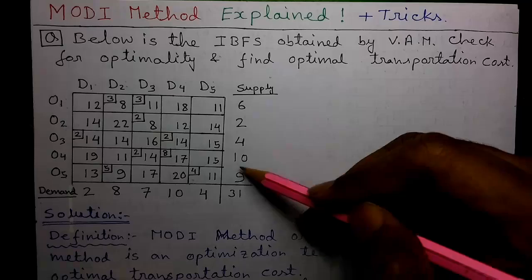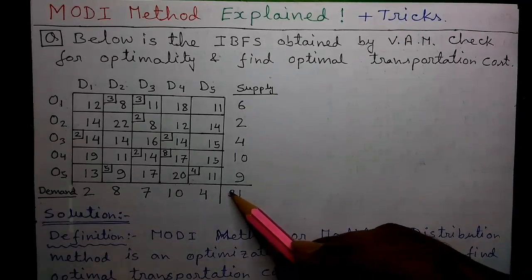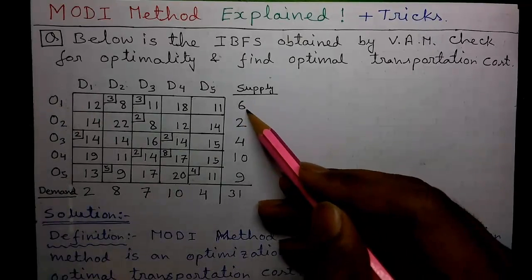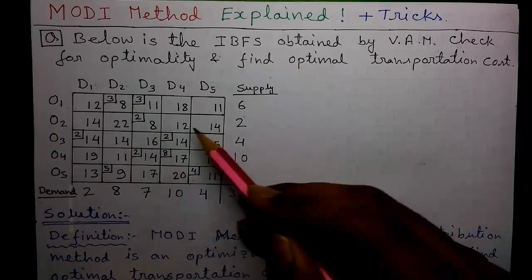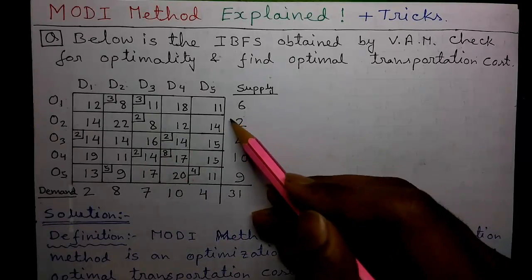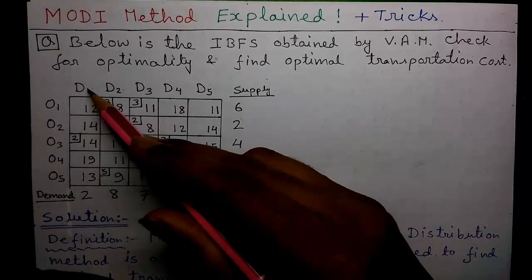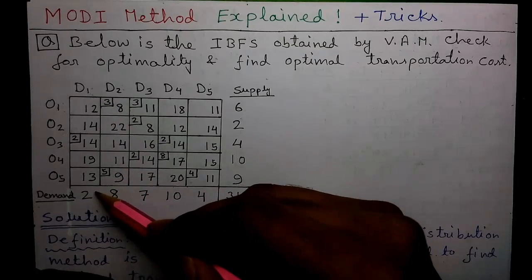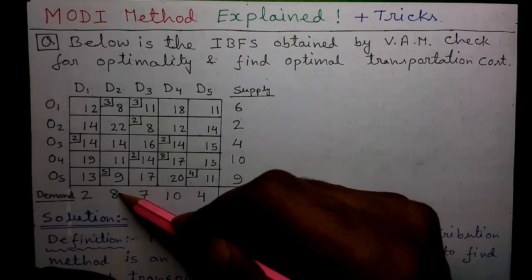Next, these outside vertical values are called the supply values and these horizontal outside values are called the demand values. That means, in origin 1, we have total supply of 6 units of goods. Similarly, in origin 2, we have total supply of 12 units of goods. And for depot D1, the demand is 2 units of goods. Similarly, for depot 2, the demand is 8 units of goods.